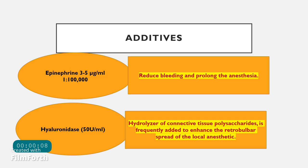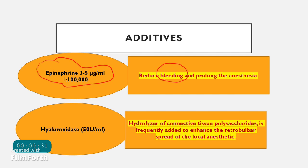The first additive to the lignocaine bottle is epinephrine. The dose is about 3 to 5 micrograms per ml, and the concentration used is preferably 1 in 2 lakhs, and not more than 1 in 1 lakh. Epinephrine, or adrenaline, is a vasoconstrictor — it reduces bleeding and prolongs the anesthesia period.